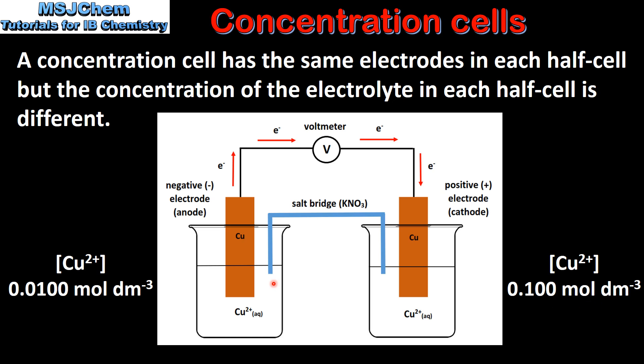In the half cell with a lower concentration, copper atoms are oxidized to form copper ions and the concentration of the solution increases. In the half cell with a higher concentration, copper ions are reduced to form copper atoms and the concentration of the solution decreases. The reaction will continue until both half cells are the same concentration.